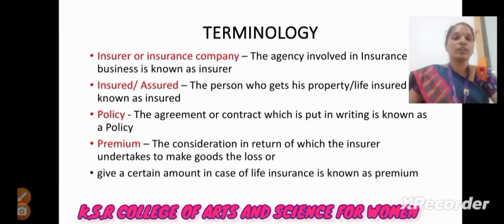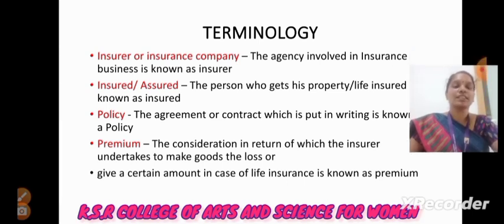Insurer or insurance company: The agency involved in insurance business is known as the insurer. Insured or assured: The person who gets his property or life insured is known as the insured. Policy: The agreement or contract which is put in writing is known as the policy. Premium: The consideration in return of which the insurer undertakes to make good the loss, or give a certain amount in case of life insurance, is known as premium.